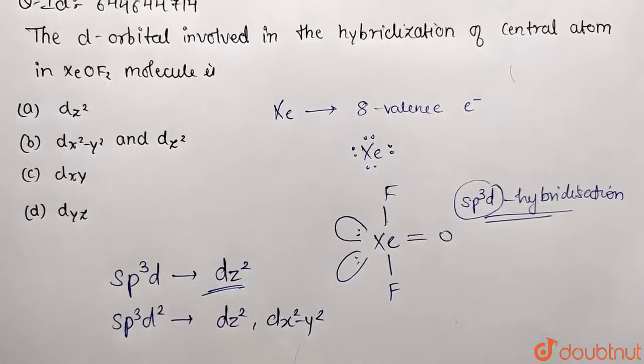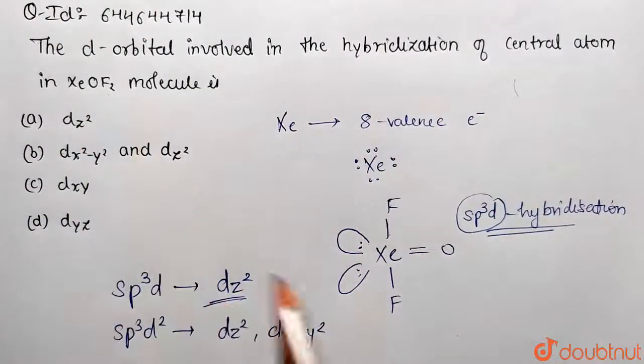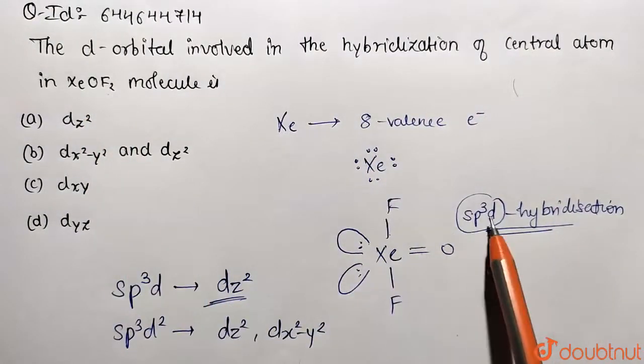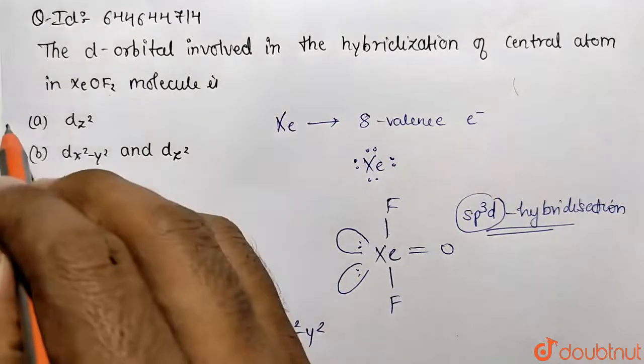So we need to answer: the d orbital involved in hybridization of central atom in this molecule. And this molecule is having sp3d, so which is the orbital participating? dz square. So option A is the correct answer.